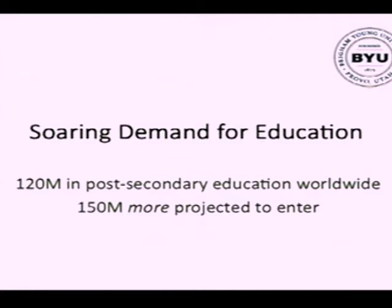We've talked about new information technology and some outdated policy. Let's talk about demand for a minute. Post-secondary or higher education — right now estimates are there are about 120 million people participating in higher education around the world, and in the next 20 to 25 years, that number is projected to grow by another 150 million — not from 120 to 150, but from 120 to 270 million. Sir John Daniel uses this example: basically, just in India, that means you have to build, staff, and open a new university every two weeks for the next 20 years to meet demand. Which means either we're not going to meet demand, or we're going to have to radically change the way we do education.